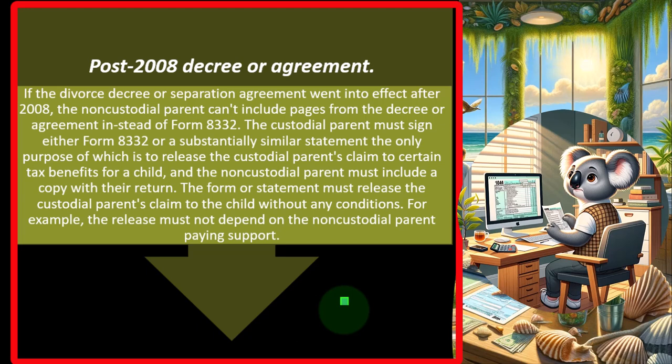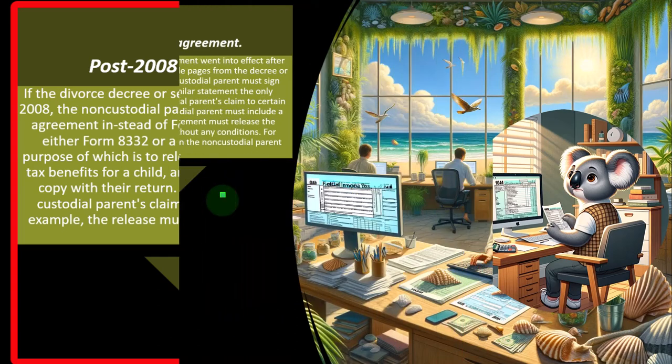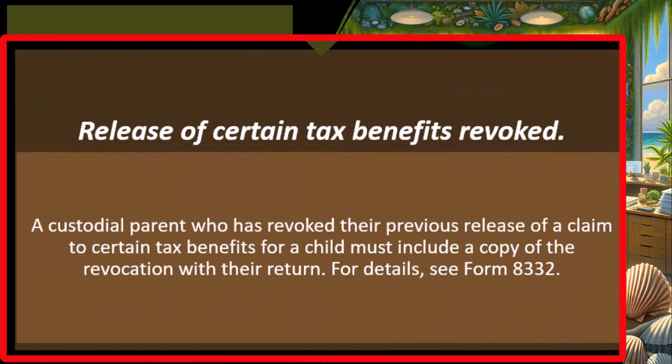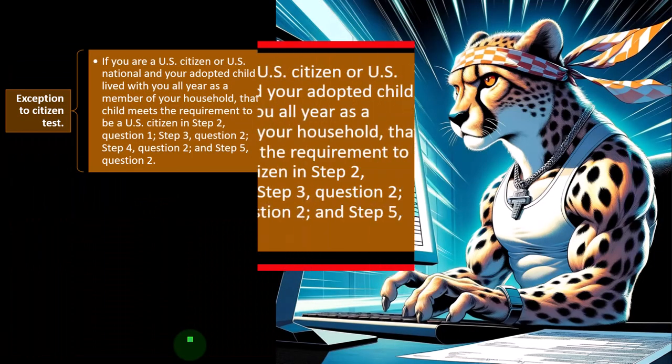The form or statement must release the custodial parent's claim to the child without any conditions — for example, the release must not depend on the non-custodial parent paying support. If a custodial parent has revoked their previous release of a claim to certain tax benefits for the child, they must include a copy of the revocation with their return. See Form 8332 for details.